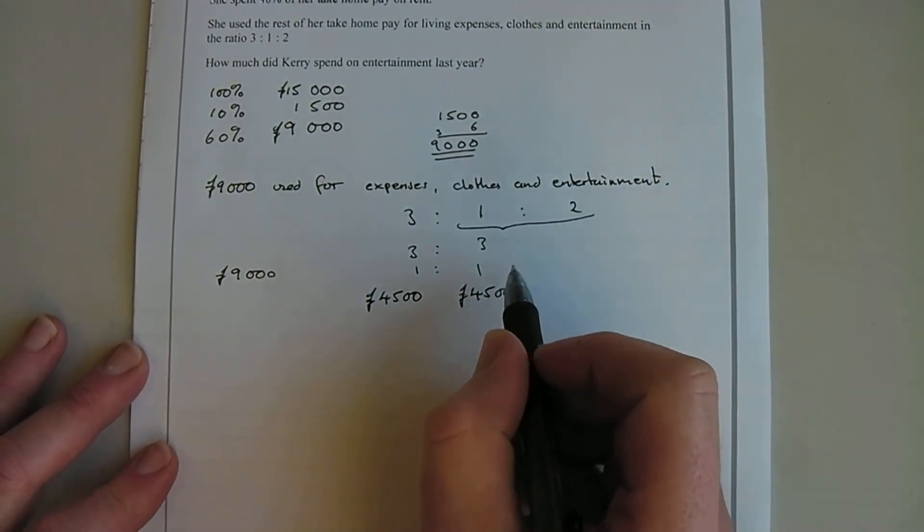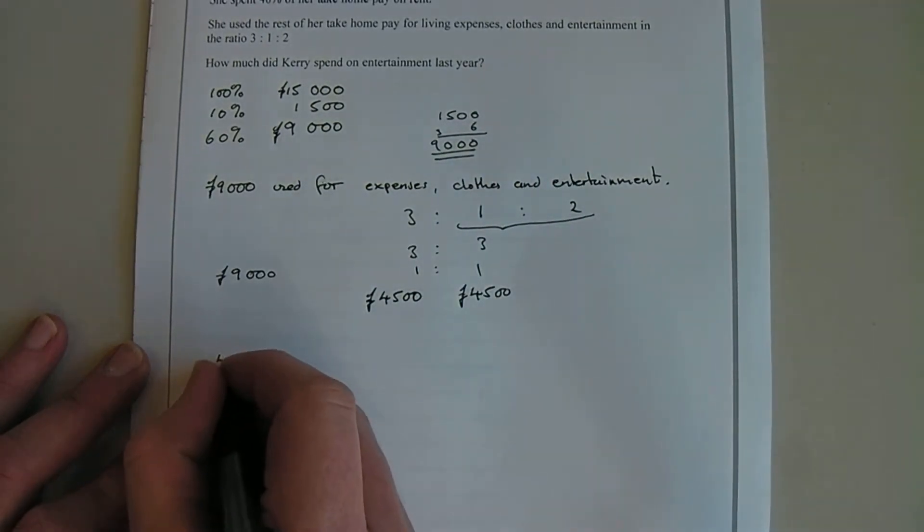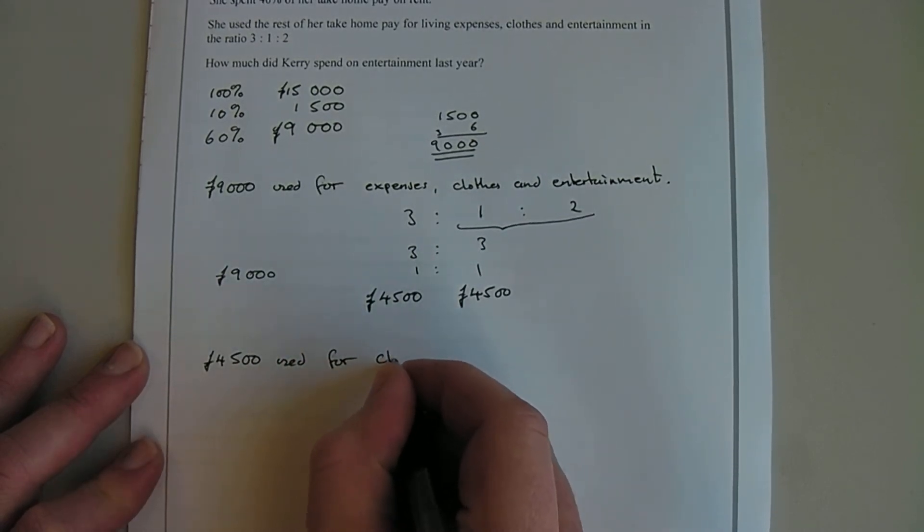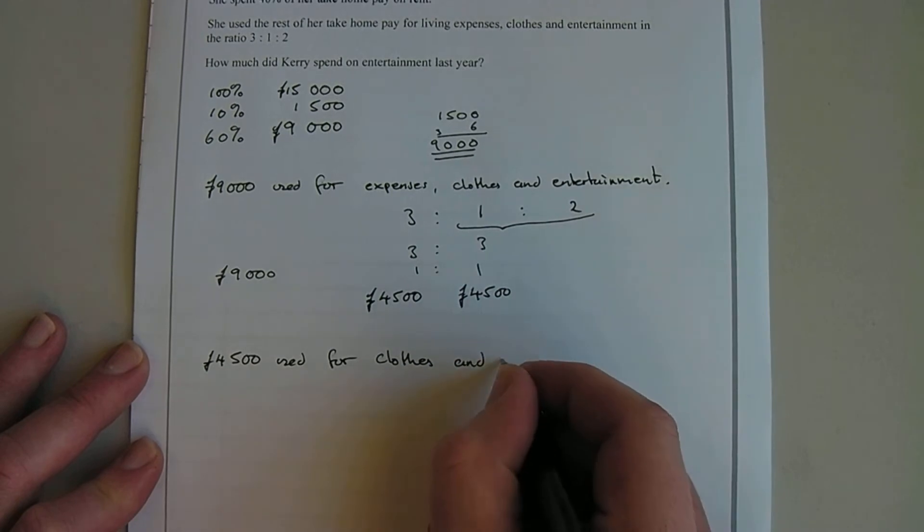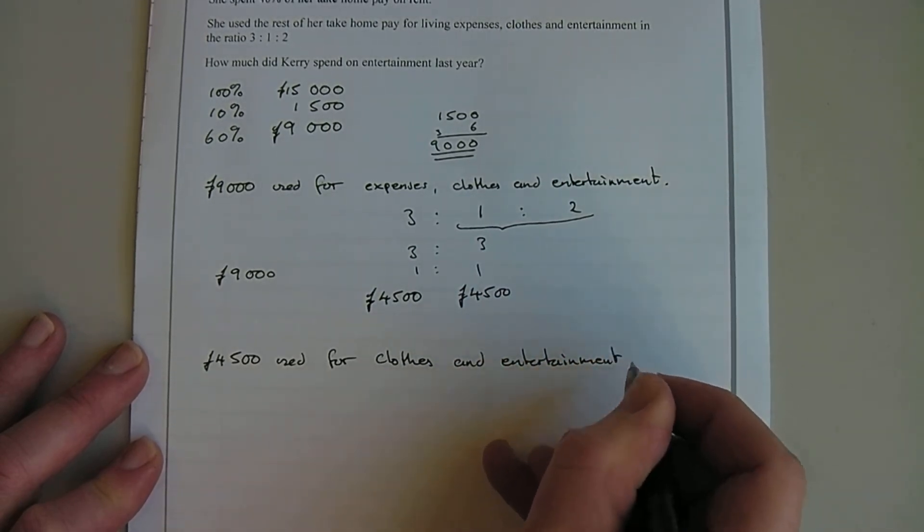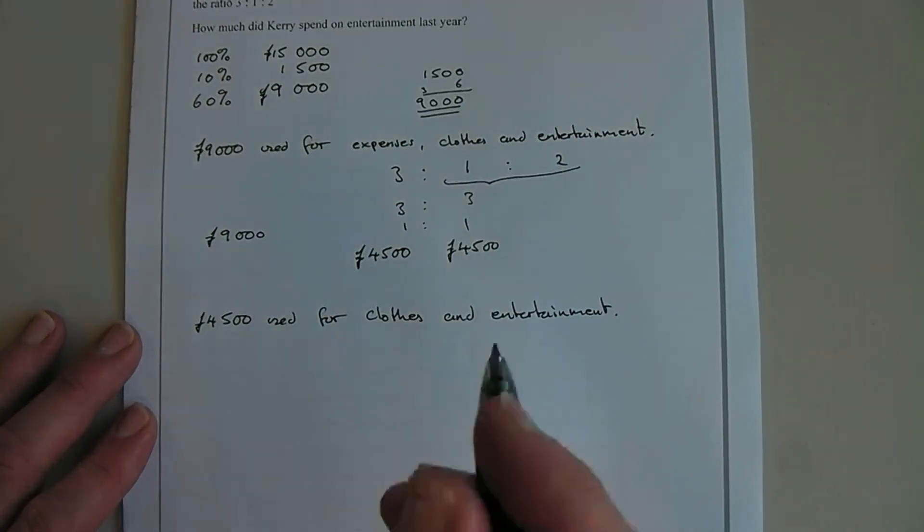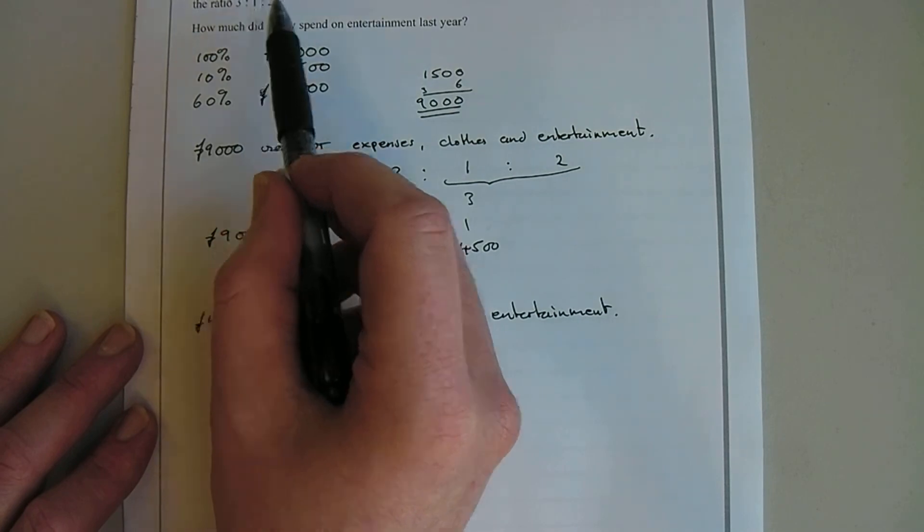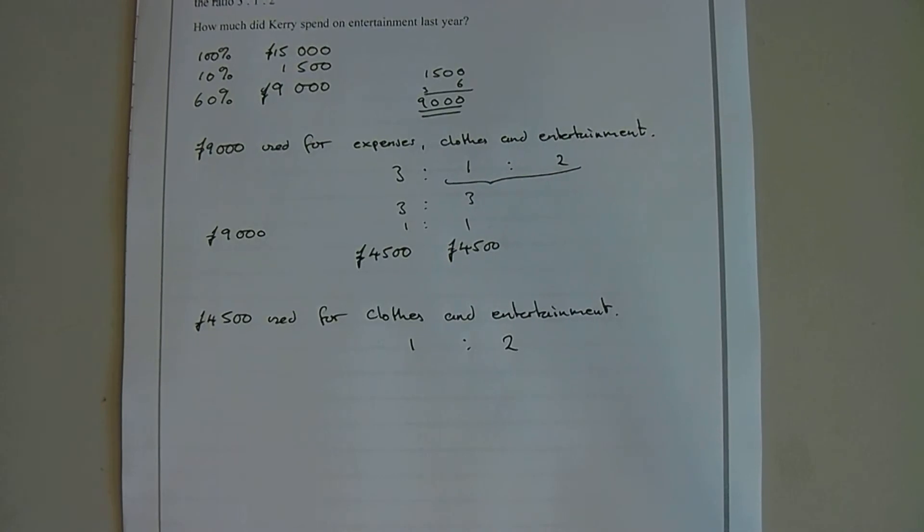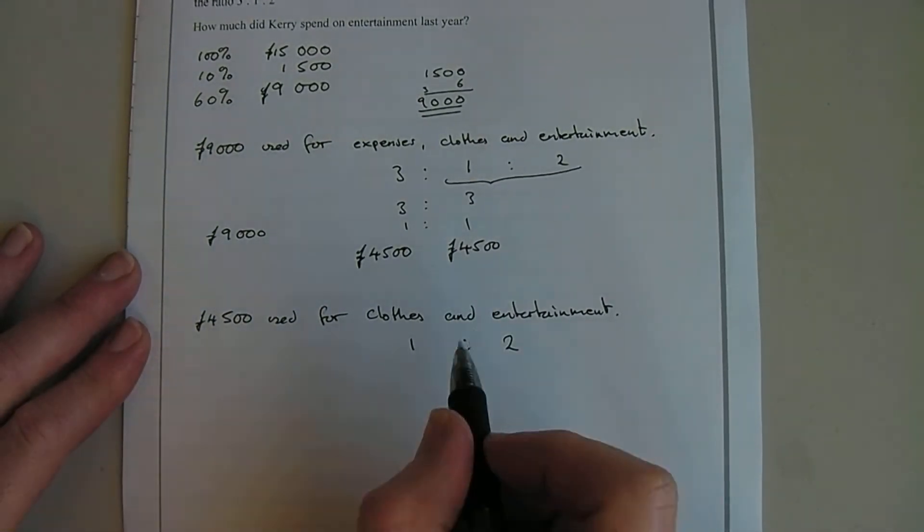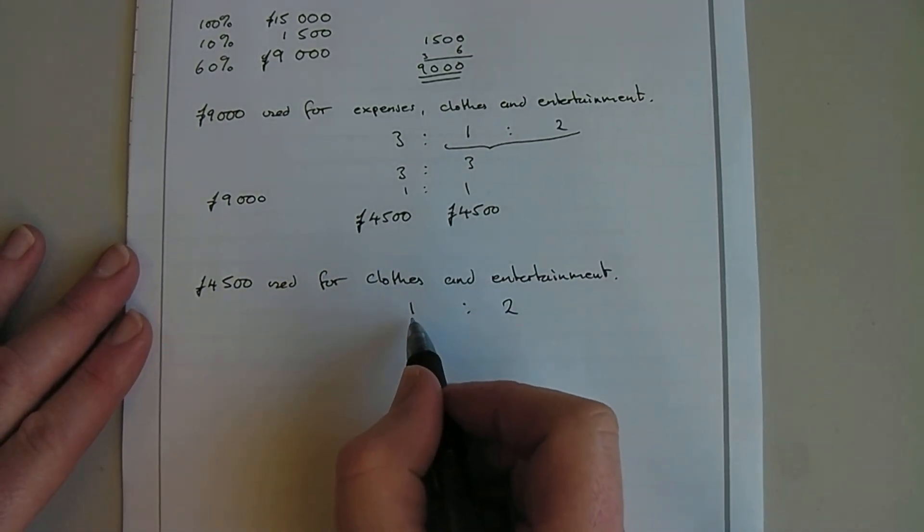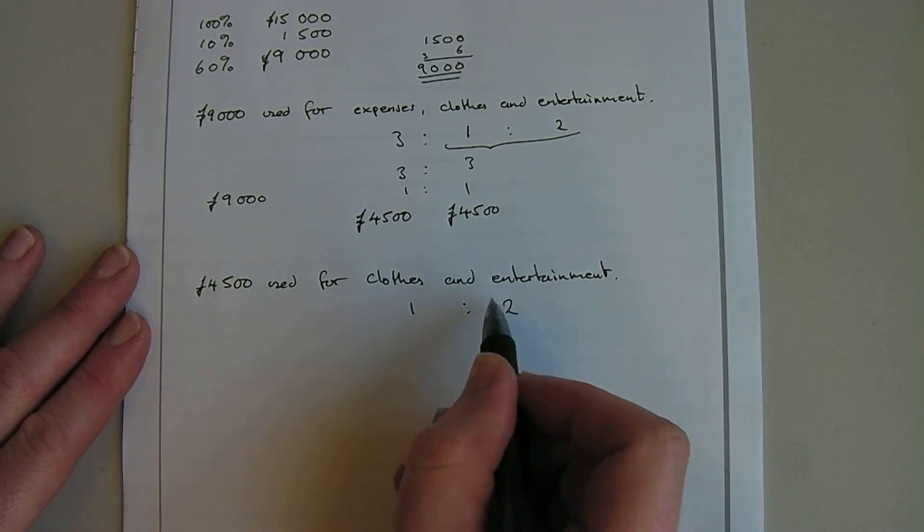Okay, so now I know that I'll spend £4,500 on clothes and entertainment. And again, it's worth taking the time used for clothes and entertainment. The examiner likes to see you writing something to explain what you're doing. And we know that the ratio is one part on clothes, two parts on entertainment. So it's 1 to 2. So I now need to split up my total of £4,500 in the ratio of 1 to 2. So one of the techniques of doing this, if I've got one part on clothes and two parts on entertainment, that's three parts in total.